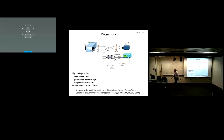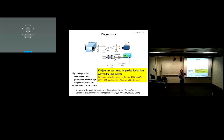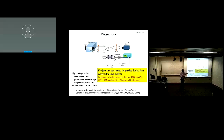Using a fast camera, we found that what you see with your naked eye isn't what's really happening. They're called plasma bullets — the device acts like a gun shooting bullets of plasma. Because it's so fast, you perceive it as a continuous plasma plume, but in reality they are discrete bullets. We discovered this at ODU, and simultaneously a group in Germany saw the same thing. This was in 2005. We then studied them further and found they are ionization waves — we call them guided ionization waves.